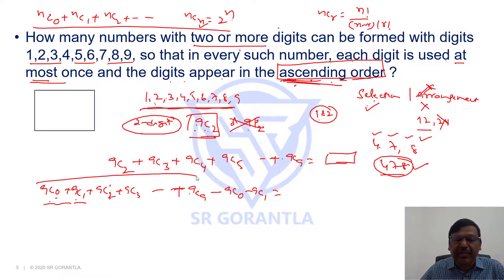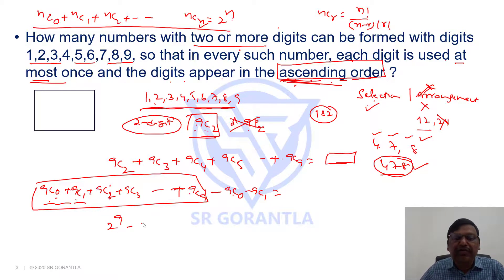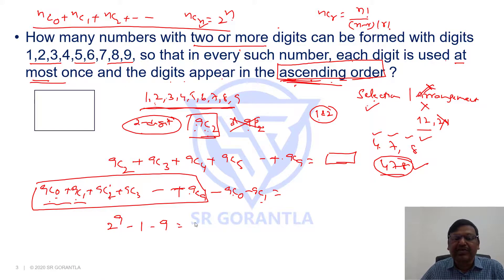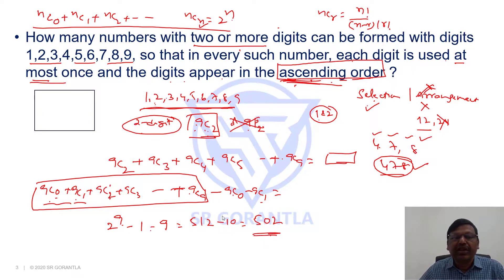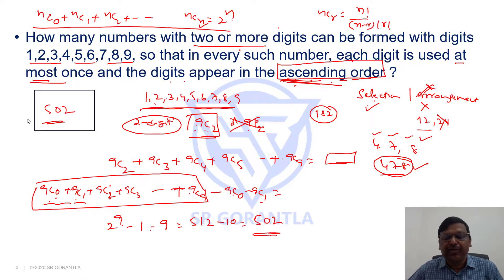So 9C0 + 9C1 + 9C2 + ... + 9C9 = 2^9 = 512. Subtracting the extra terms: 9C0 = 1 and 9C1 = 9, so 512 − 1 − 9 = 502. There are 502 such numbers possible. The answer is 502.